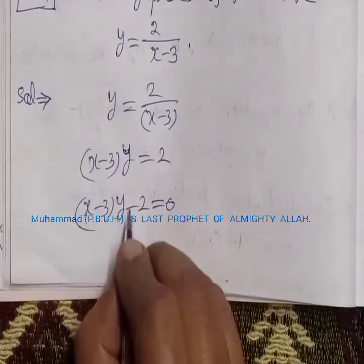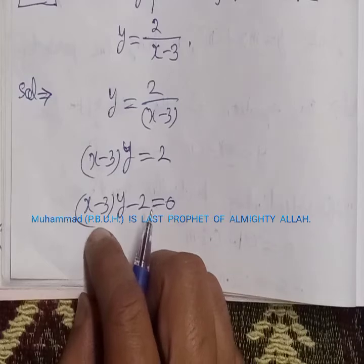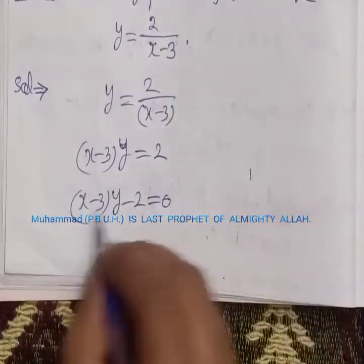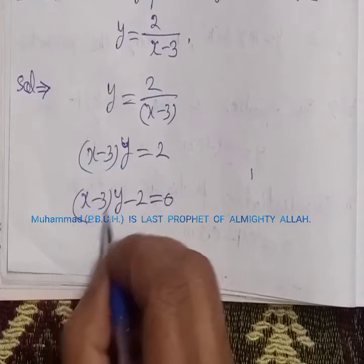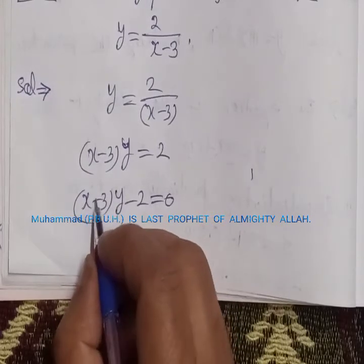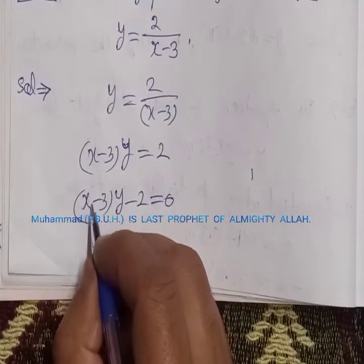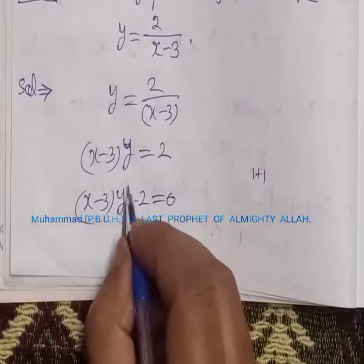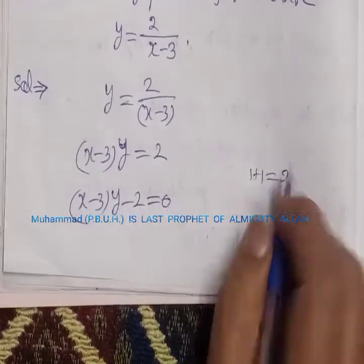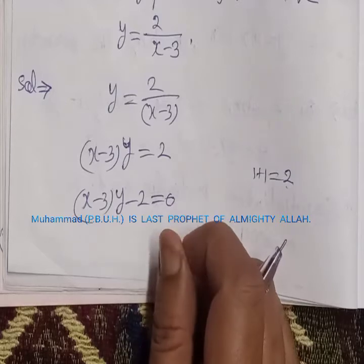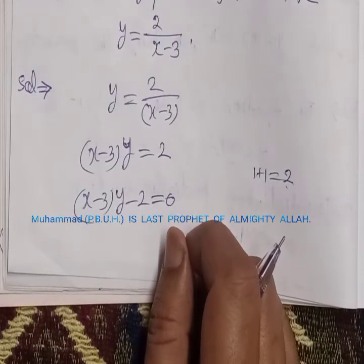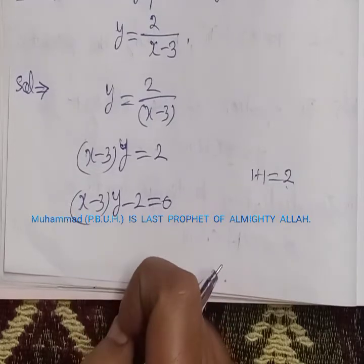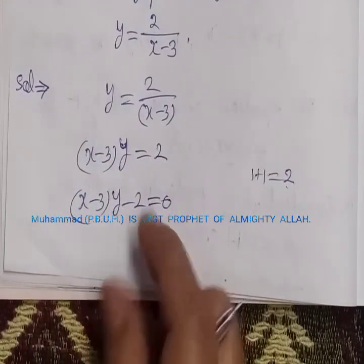If we multiply these two factors, the degree of x is 1 and the degree of y is 1, so the highest degree is 1 plus 1 equals 2. Since this is a second degree equation, it can have at most 2 asymptotes.